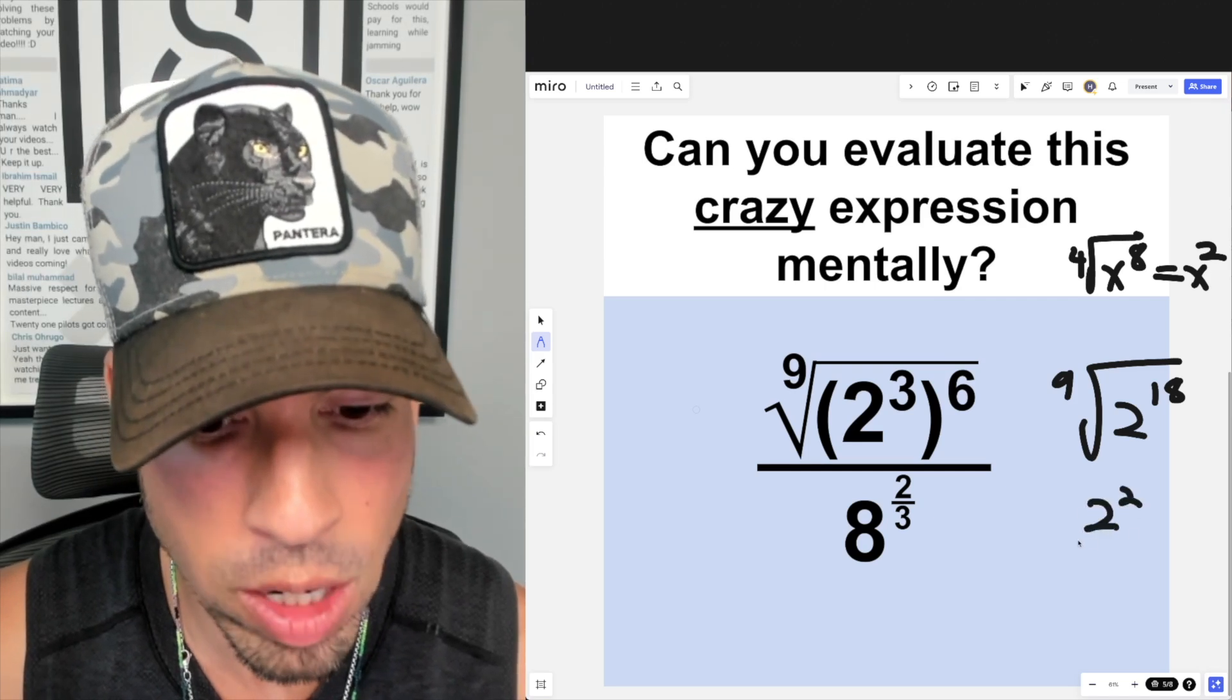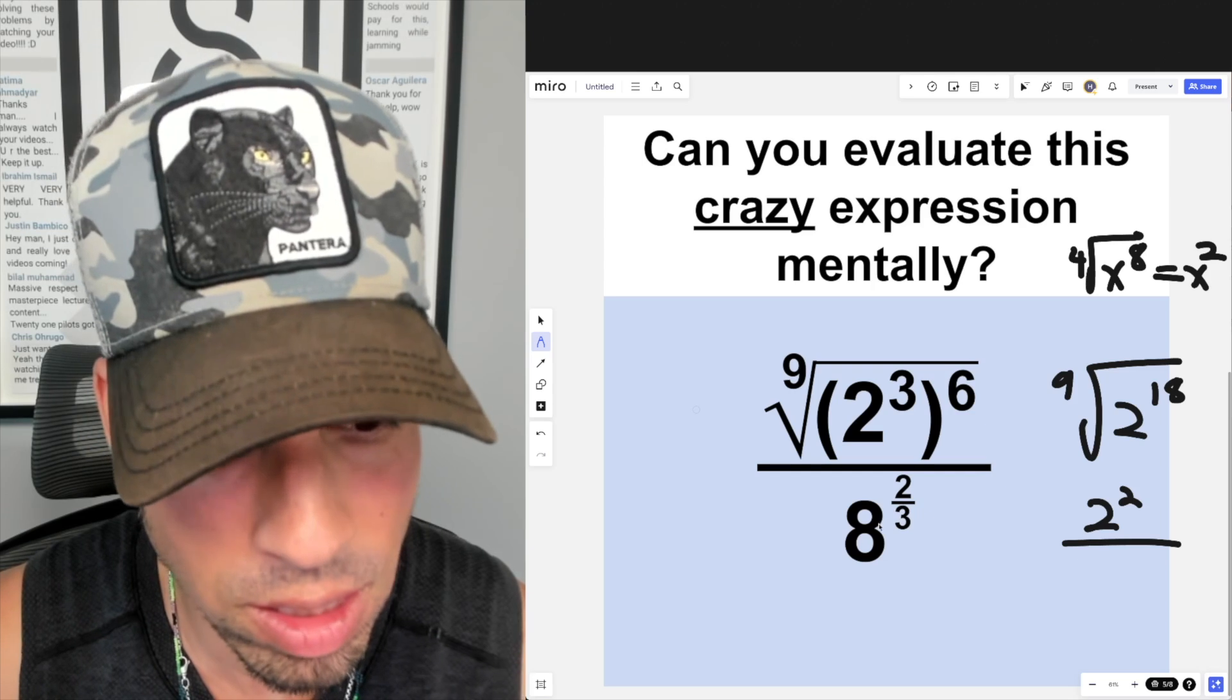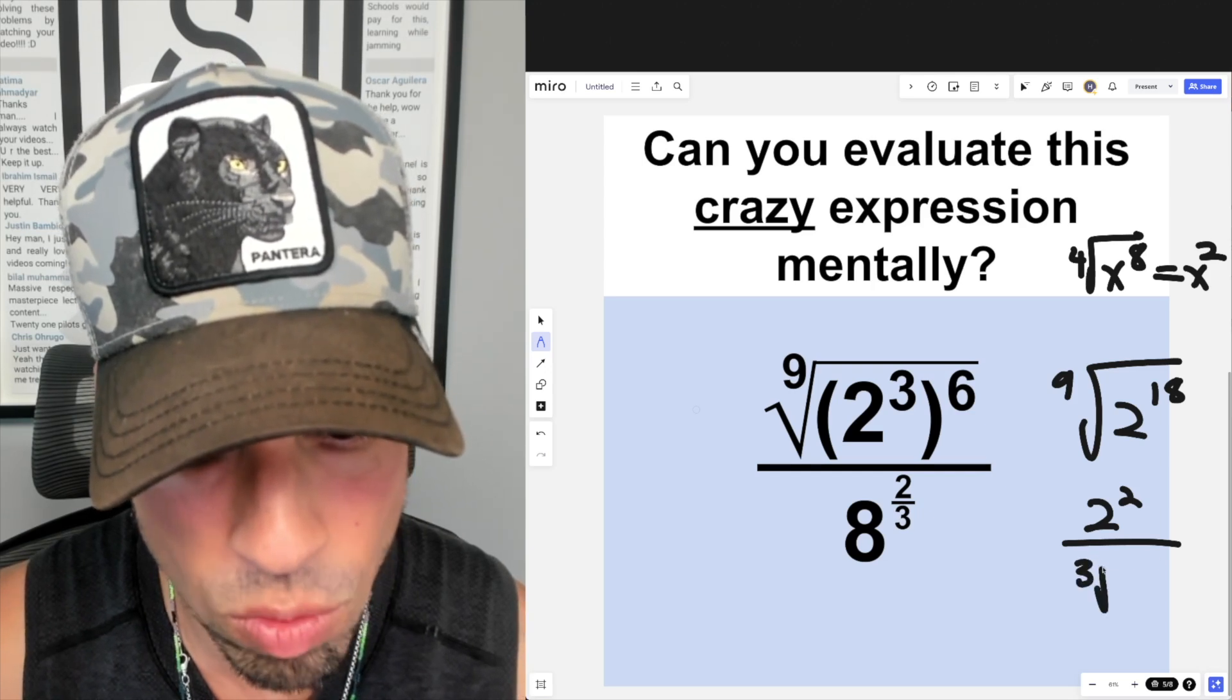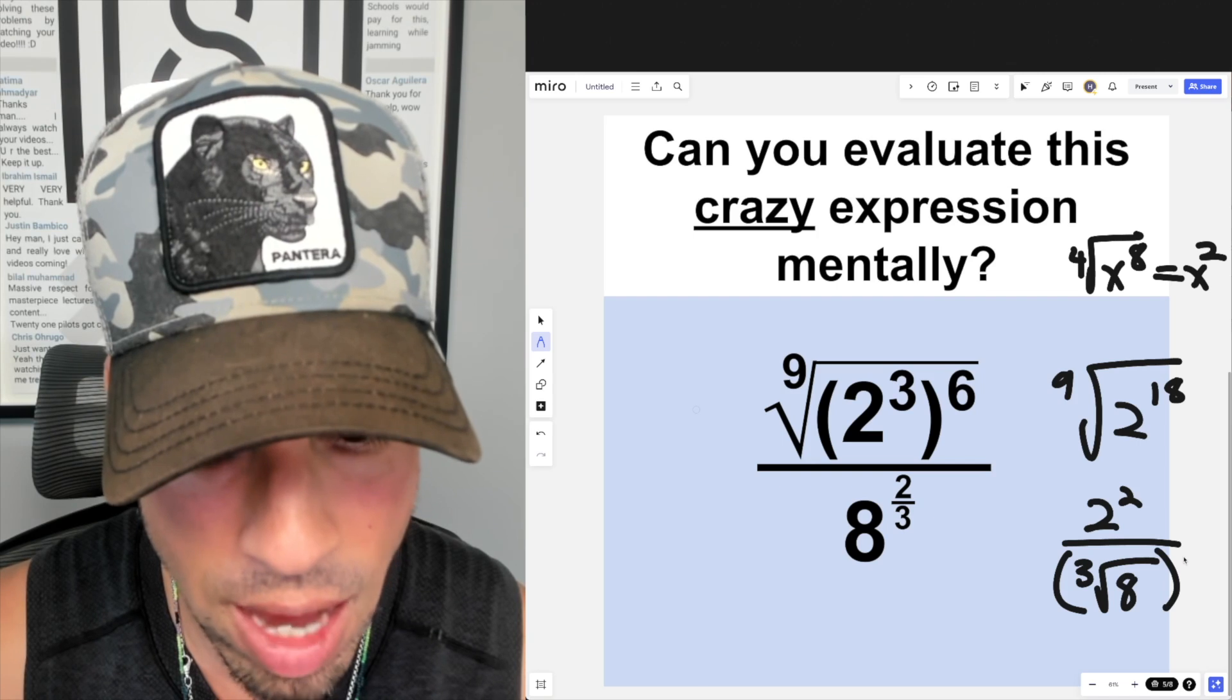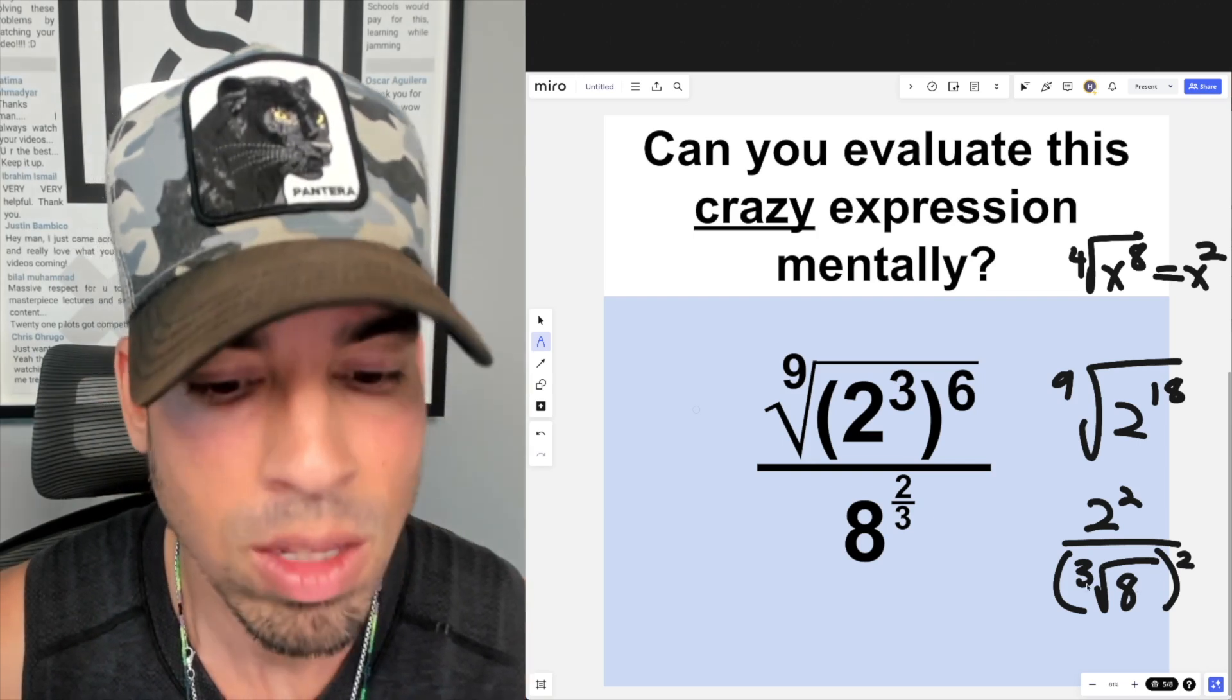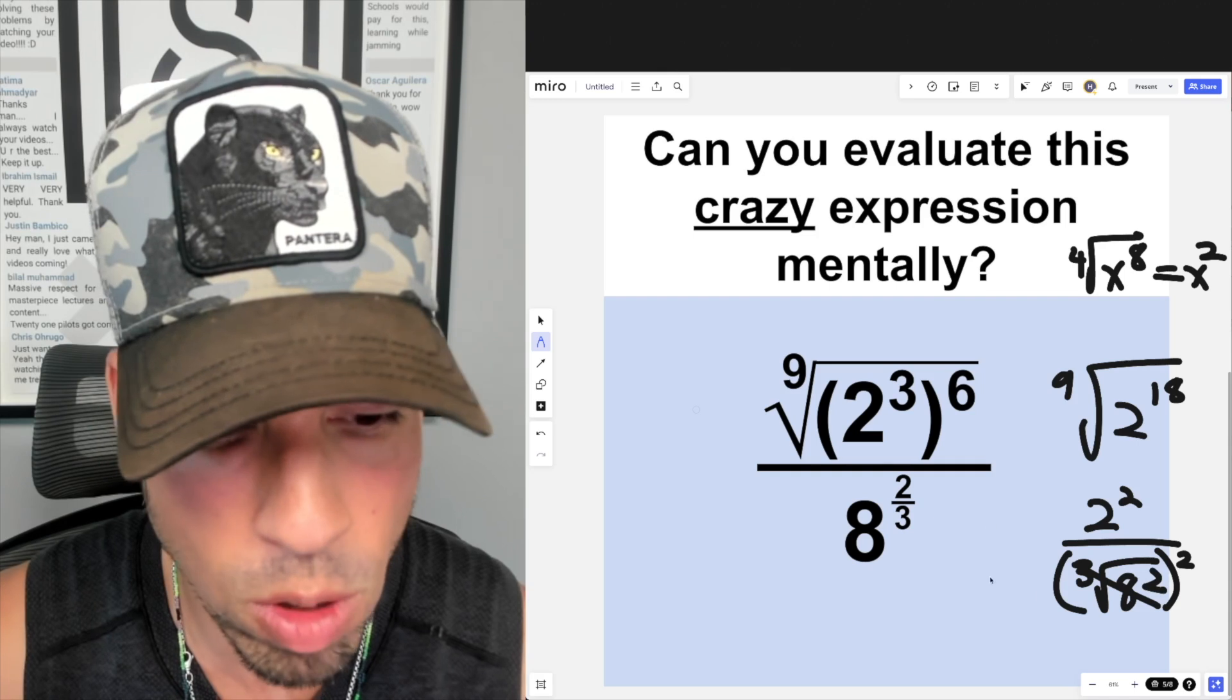What about on the bottom? 8 to the two-thirds power. The way to rewrite this is that denominator is really the radical and that numerator is the exponent. We take the cube root of 8, which is 2, and then we square it, which is 4.